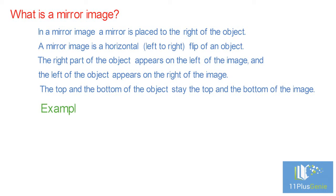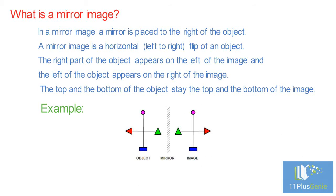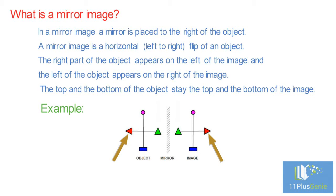Let us show you what we mean. Look at this example. In this diagram, this triangle is closest to the mirror. In the mirror image it must be closest to the mirror. This arrow is furthest away from the mirror and it points away from the mirror. In the mirror image it must be furthest away from the mirror and it must point away from the mirror. The top of the object appears at the top of the image and the bottom of the object appears at the bottom of the image.